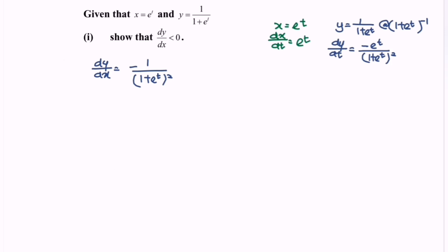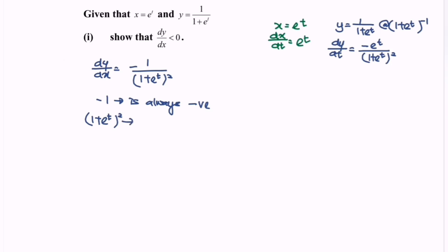So now we are going to show that dy/dx is less than 0. By referring to the numerator where we have negative 1, this part is always negative. Then kindly focus on 1 plus e to the power of t, bracket squared. For this part, as we all know, if we have the square, then we will always have a positive value.